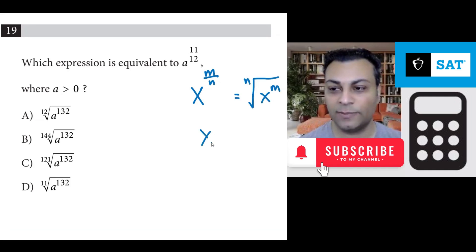For instance, if you have x to the power of 5 over 7, you can rewrite that as the 7th root of x to the 5th. So that's an example. You can also do it from here to here.